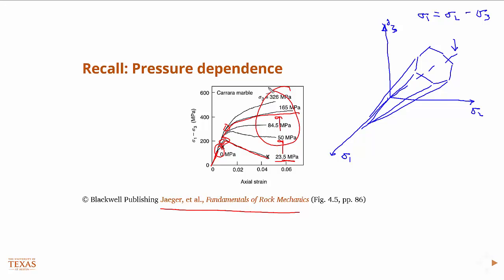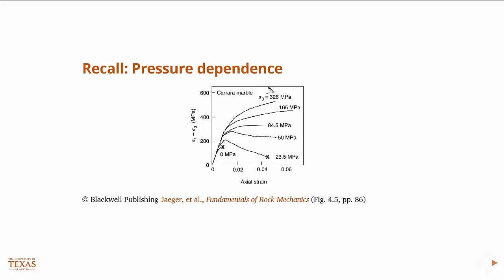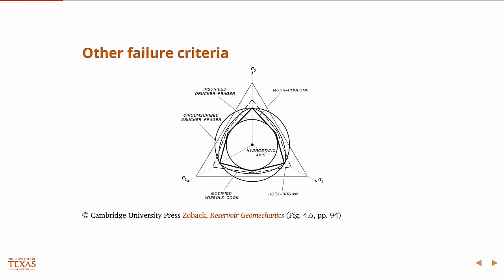So we need constitutive models that include pressure dependence, and we've talked about one, the Moore-Coulomb. There are many others, some common ones. And so this is a view down the hydrostat, right? So this is a view looking down the line. This dot in the center is the line sigma-1 equals sigma-2 equals sigma-3. And so here's our Moore-Coulomb surface that we've already looked at. But there are many others that can describe the behavior of rock more accurately. And we'll look at a couple of those today.